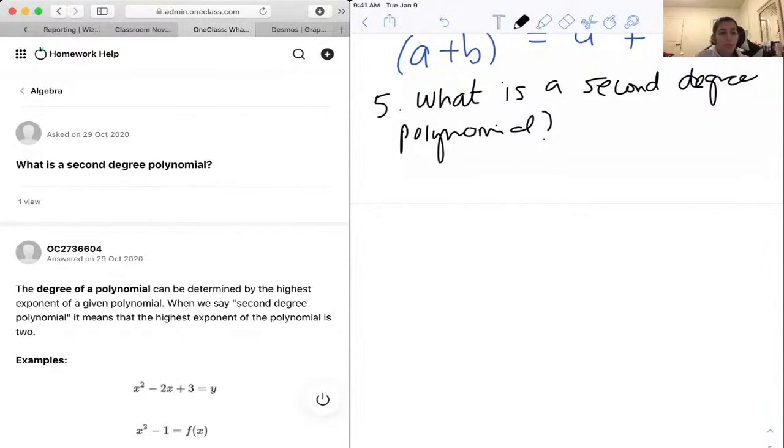A first-degree polynomial would be, exponent would be 1. So, a first-degree one is maybe like x plus 1, because we know the exponent over here is 1.